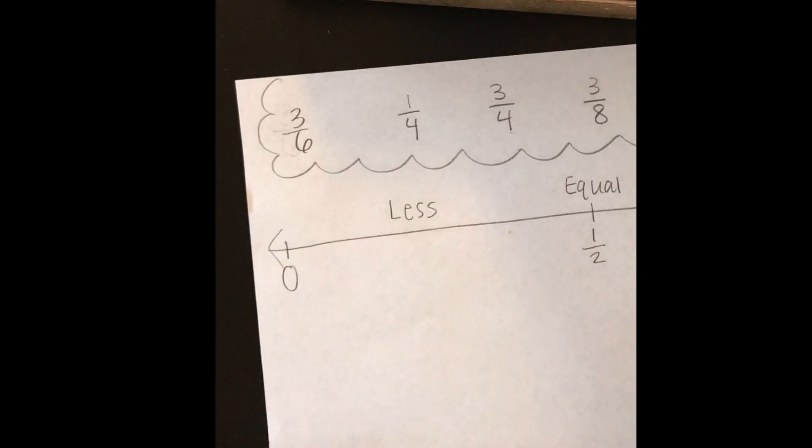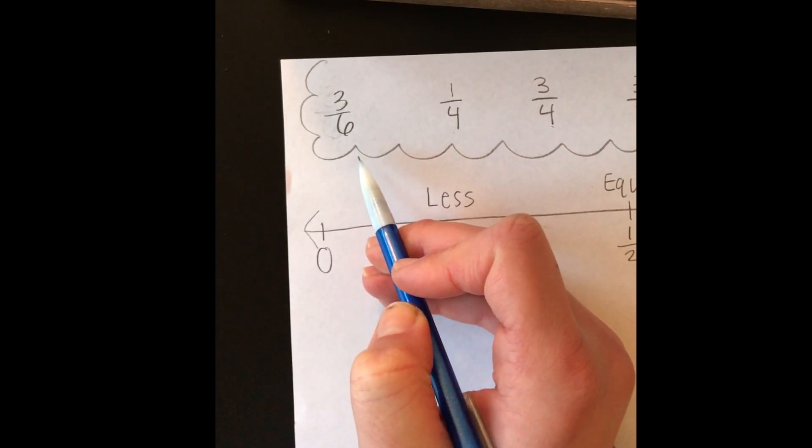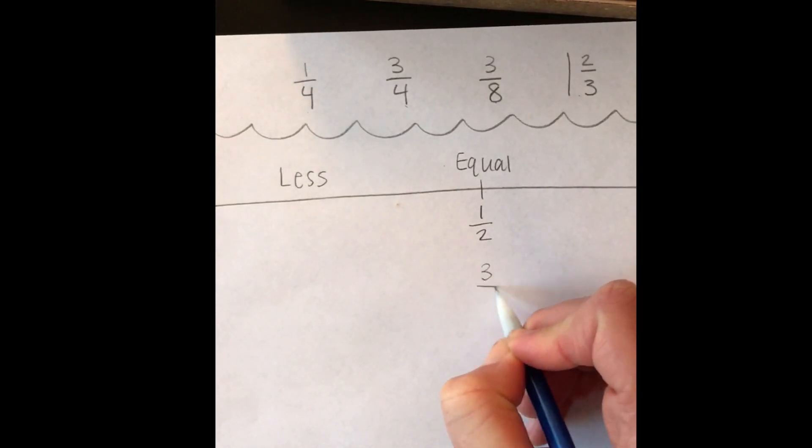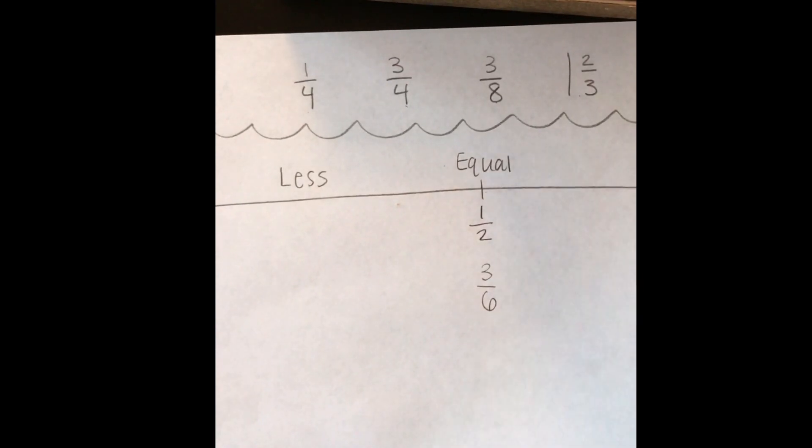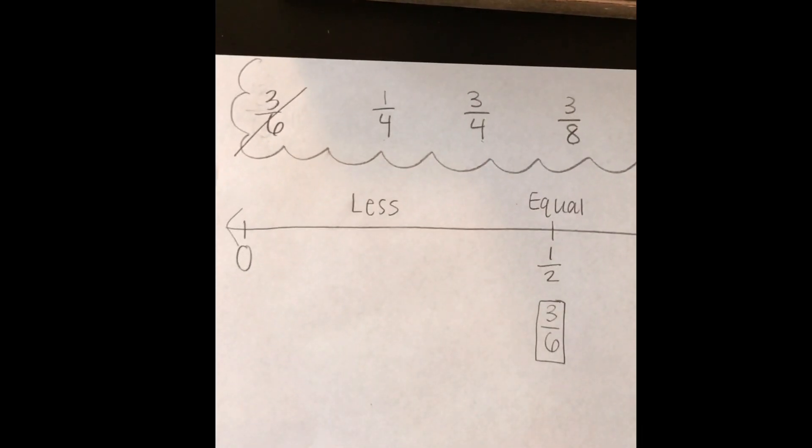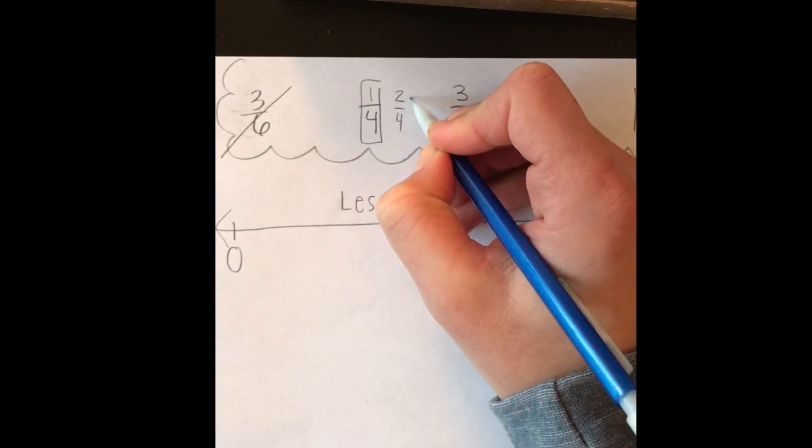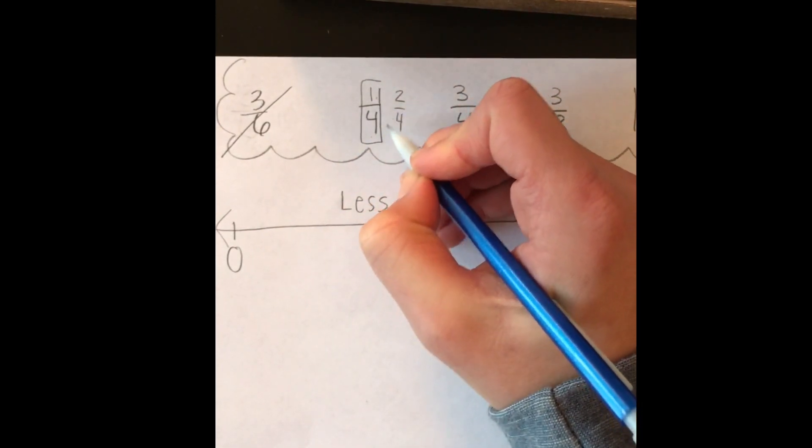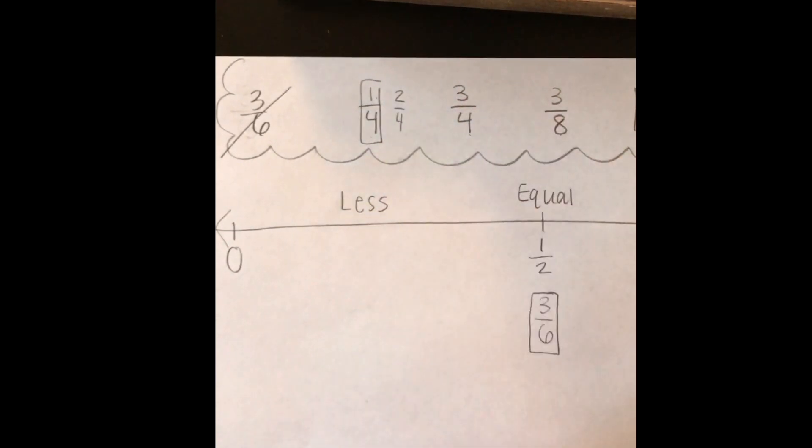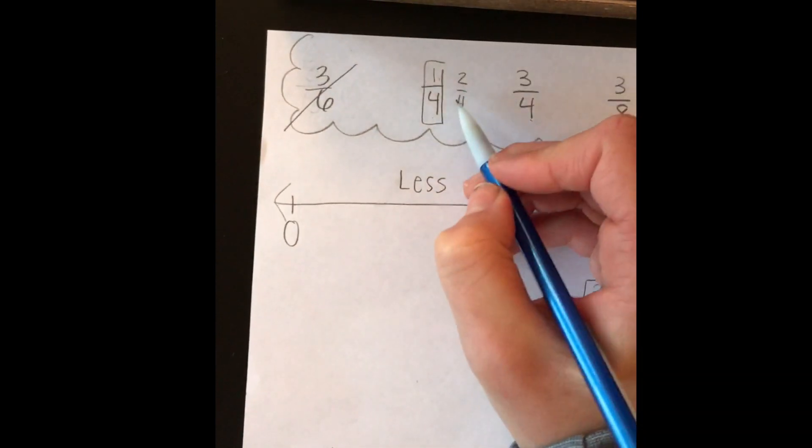Let's look at our fraction 3 sixths. 3 plus 3 is 6, so that means 3 is half of 6. So that fraction is actually equivalent to 1 half, and I'm just going to write it here under our 1 half because that is the same thing as 1 half. The next fraction we have is 1 fourth. I know that 2 plus 2 is 4, so that means half of 4 is 2. If half of 4 is 2, that means 1 fourth is smaller than half because 1 is smaller than 2. So I'm going to write it below the less than half side, down at the bottom here.